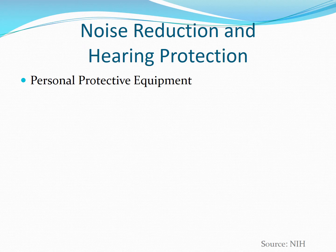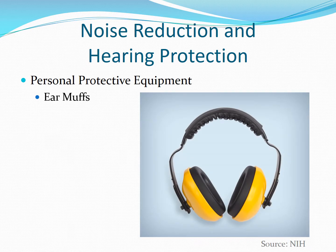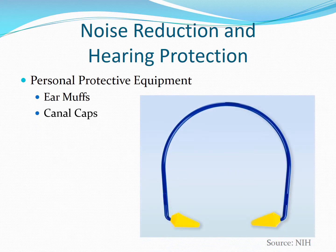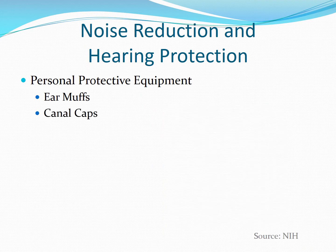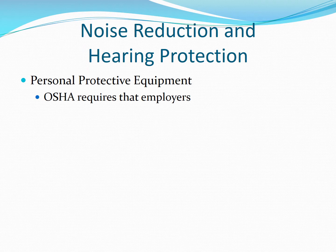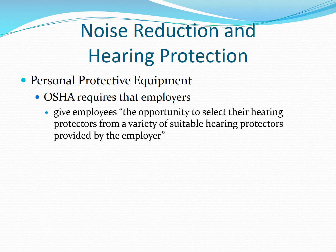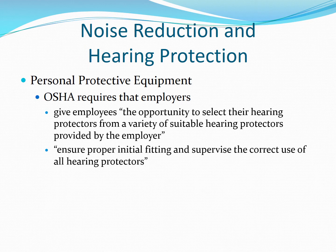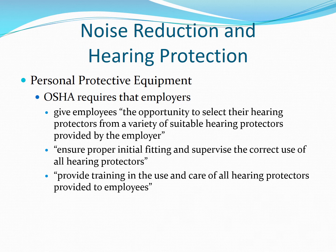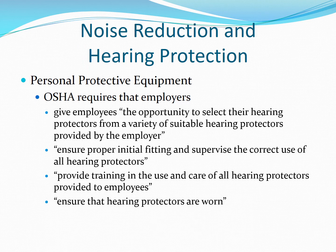When employers cannot reduce noise to acceptable levels with either administrative or engineering controls, they must provide employees with personal protective equipment. Three common types of hearing protection are ear muffs, canal caps, and ear plugs. Employees must be given a selection of suitable options, and employers must see that the personal protective equipment is properly fitted and that employees are trained in its use. They must ensure that employees are using their hearing protection and using it correctly.